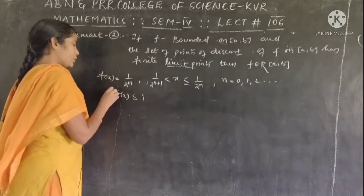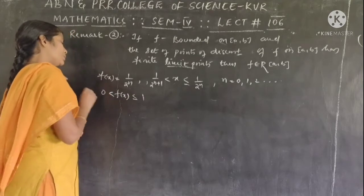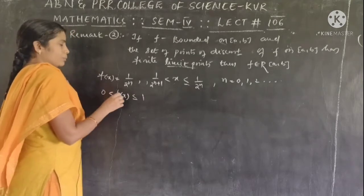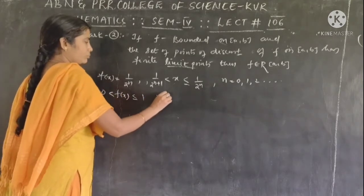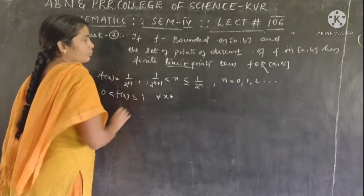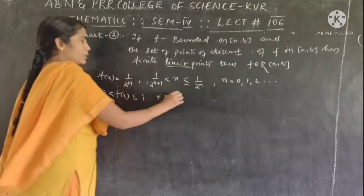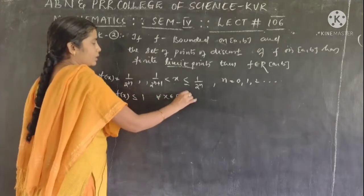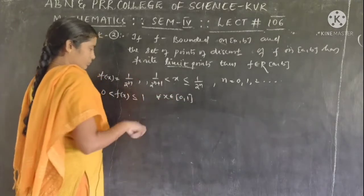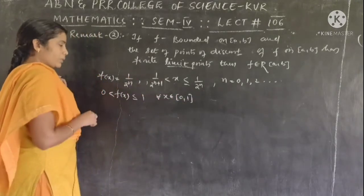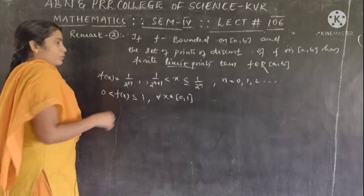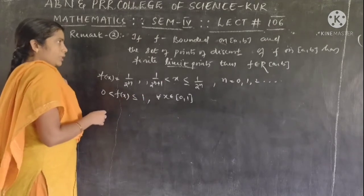The interval we choose is 0 to 1. So the function is defined on [0,1] and the function is bounded on this interval.